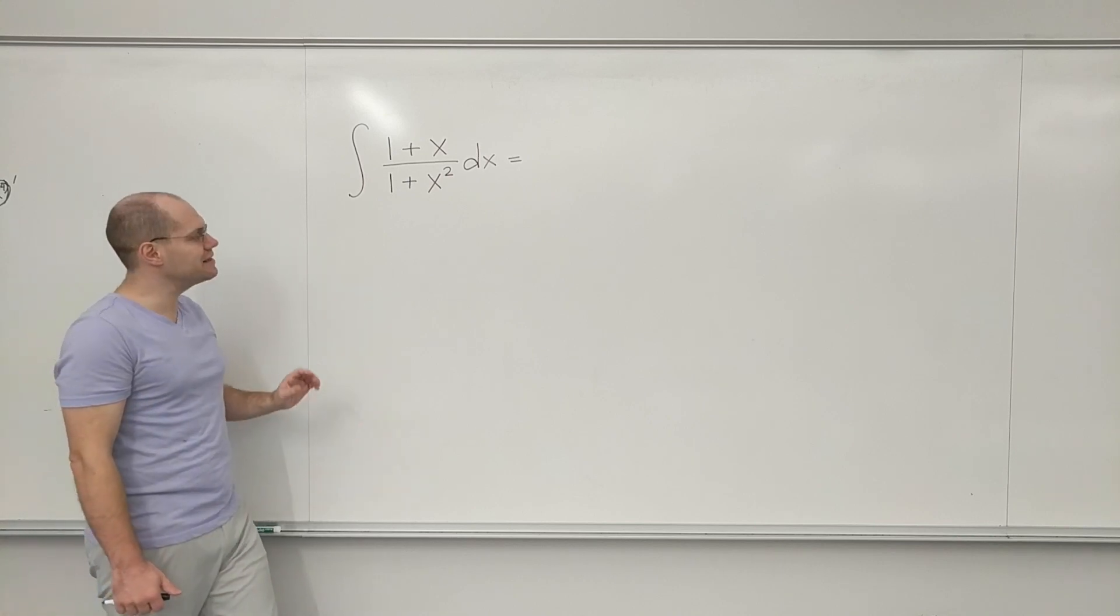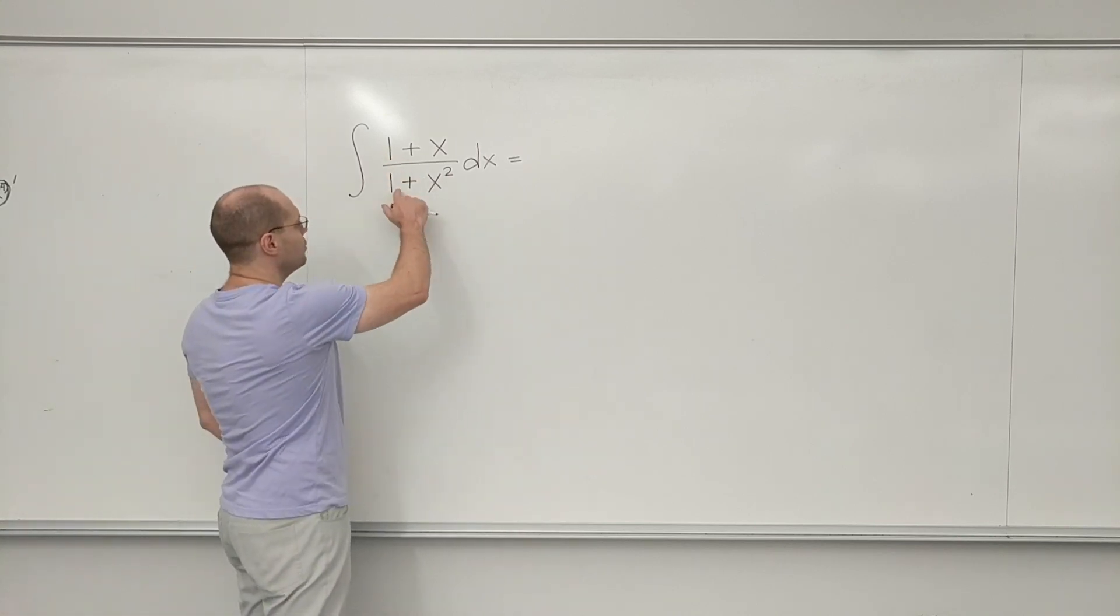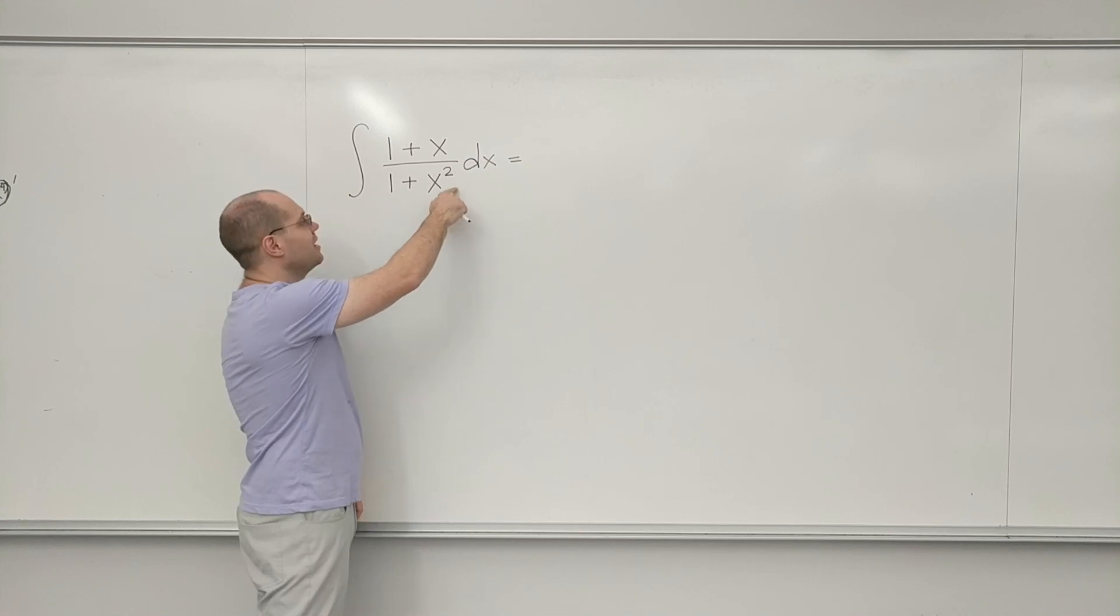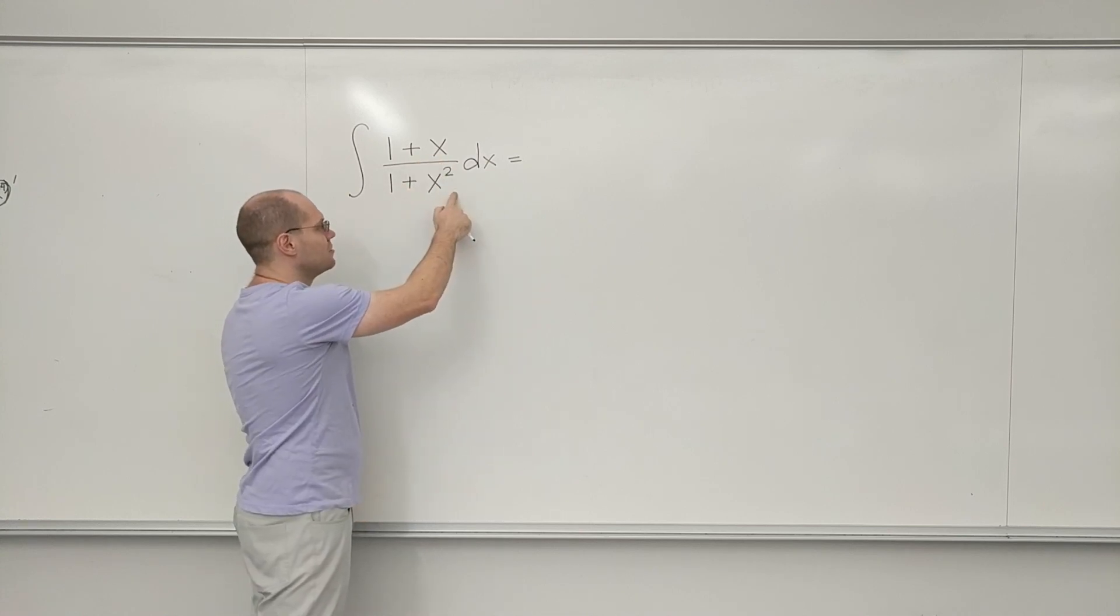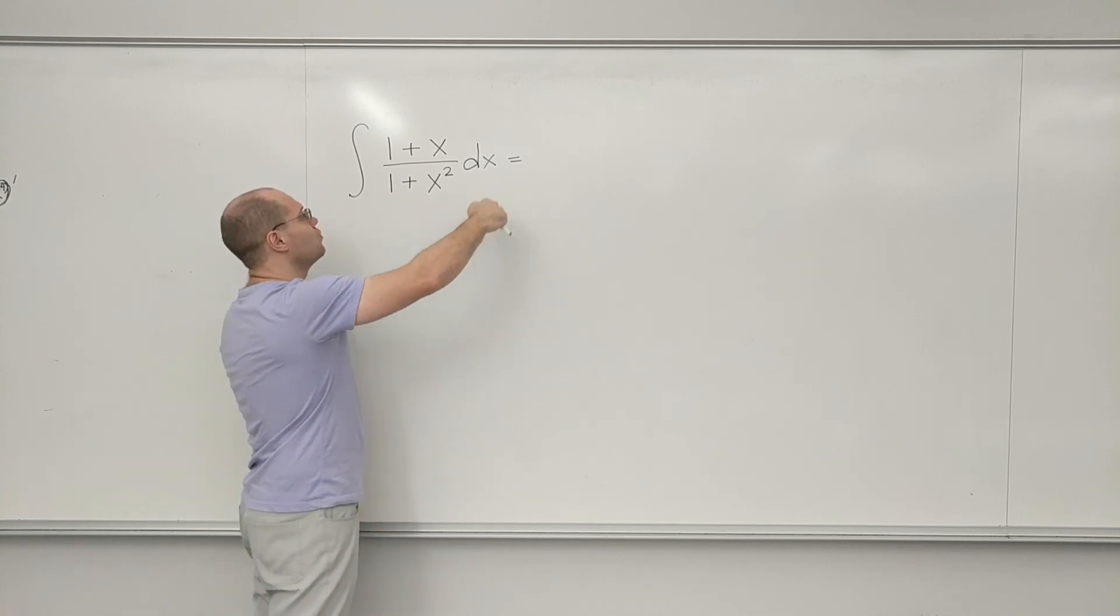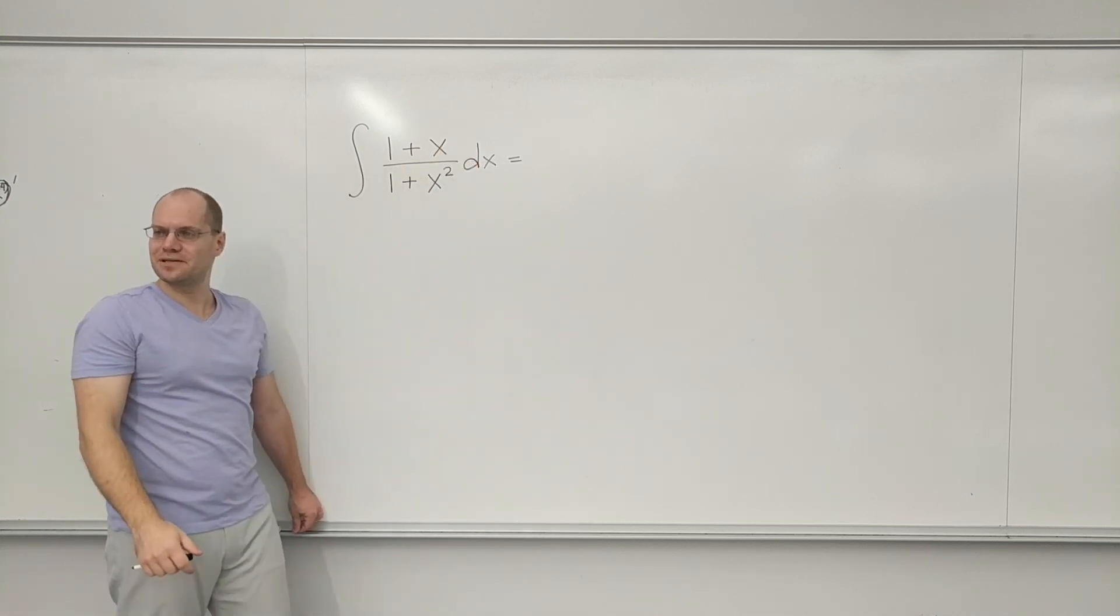And then I'll recognize immediately that that will work, because 1 over this gives me arctan, straight up. And then when I have x over this, I'll think of it as 1 over something with the derivative of something as a multiplicative factor.